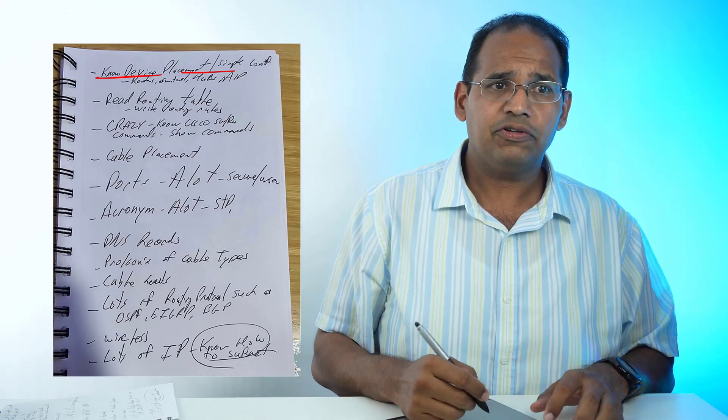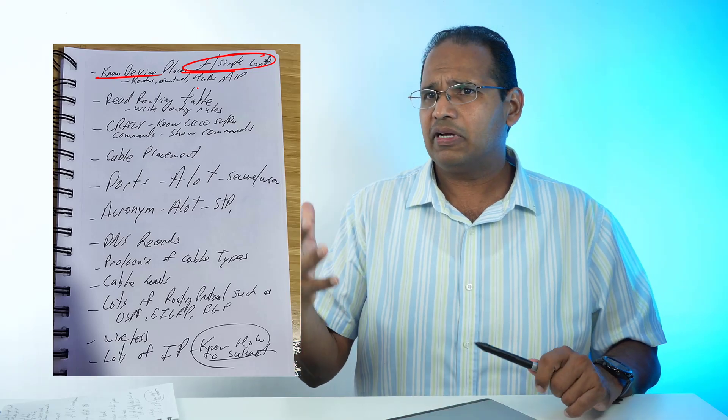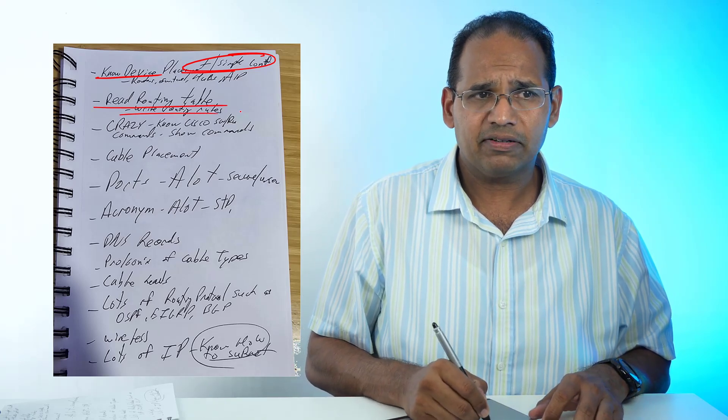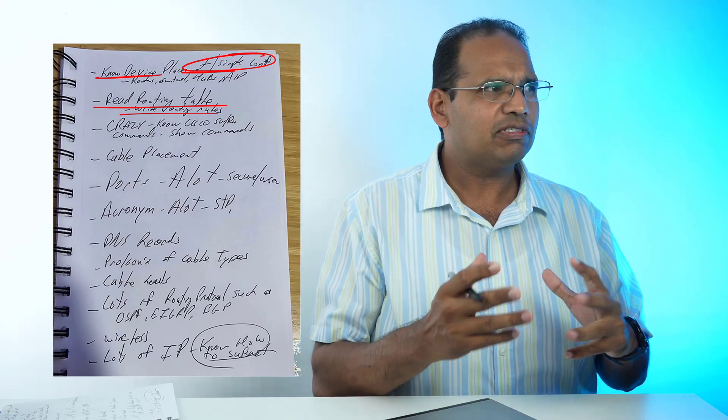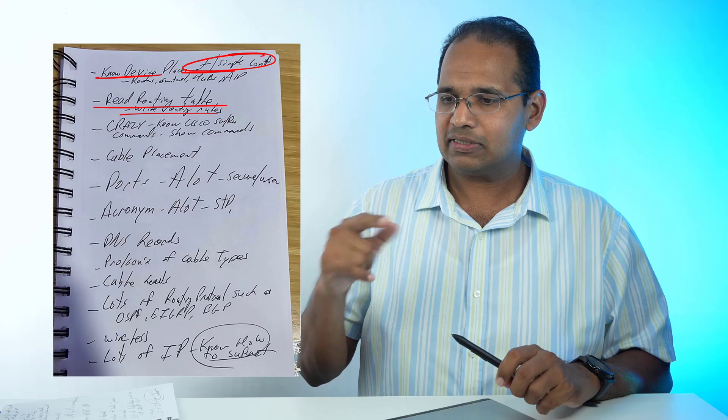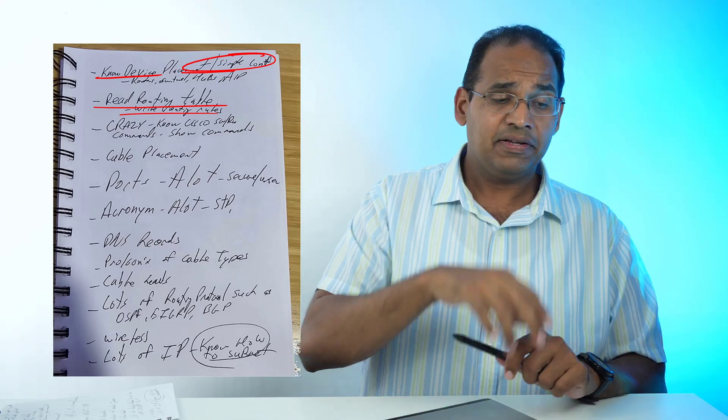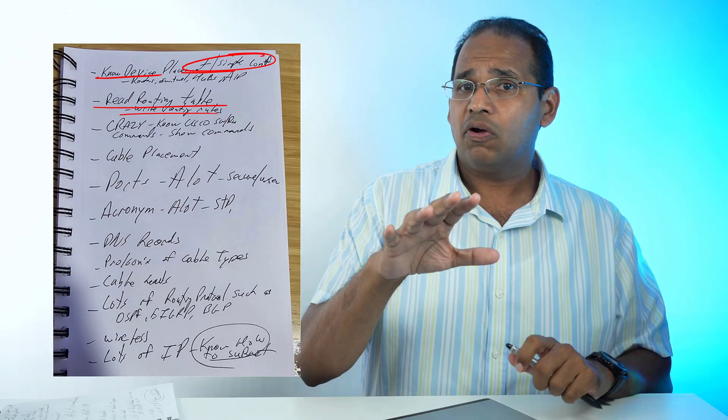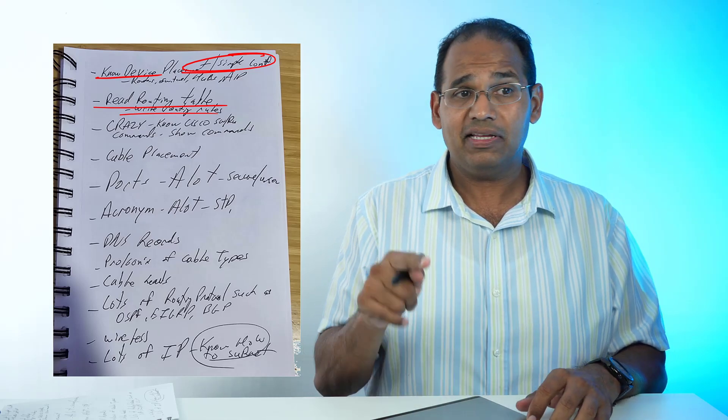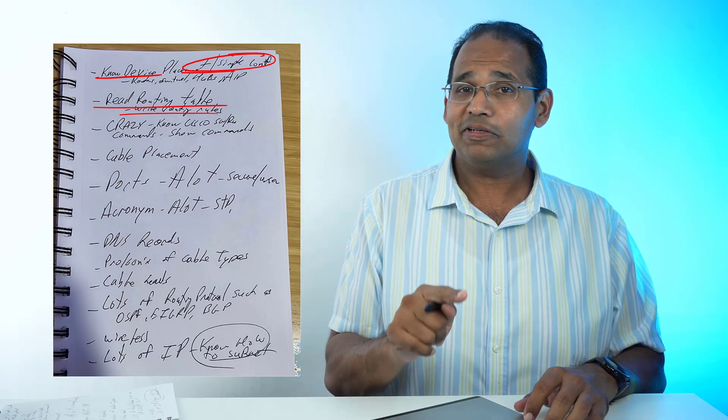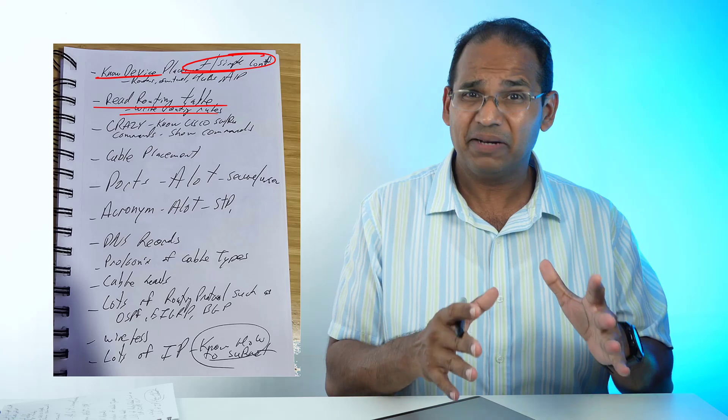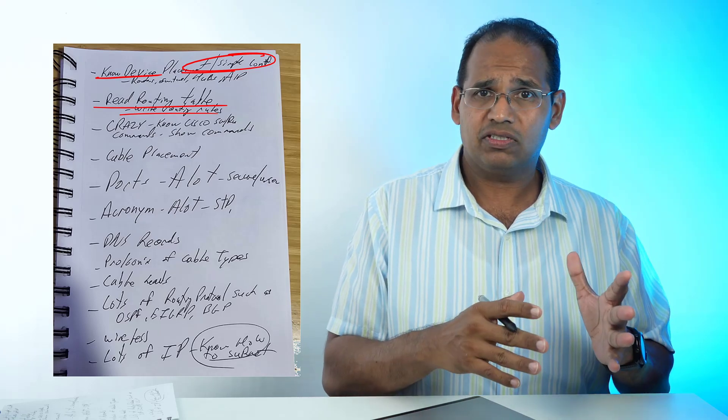You have to know simple configurations and show commands. You have to be able to read routing tables. If I'm adding a static route to get this router to talk to that router, what exactly is that static route? In the course, we do a lot of hands-on. I added a giant lab section that's basically going to make you CCNA certified—not all of it, but most of it.